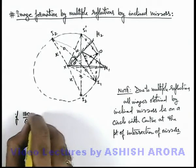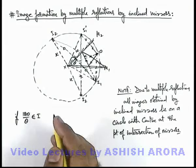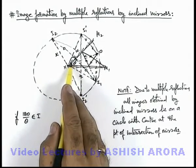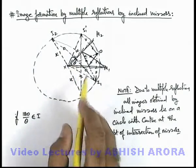180 by theta belongs to set of integers, that means if 180 is wholly divisible by the angle between the two mirrors.